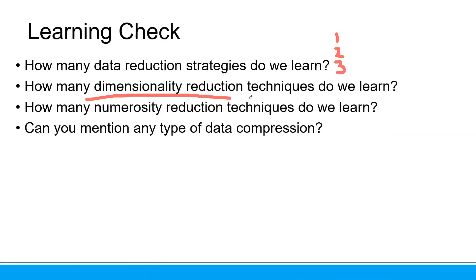This is the learning check. How many data reduction strategies do we learn? At least we have three: dimensionality reduction, numerosity reduction, and compression — which is a combination of dimension and numerosity. How many dimensionality reduction methods do we learn? We have wavelet, PCA, attribute selection, and feature creation. It is all about the attribute.